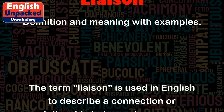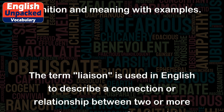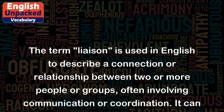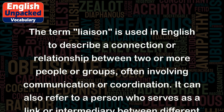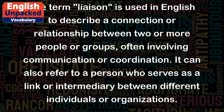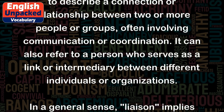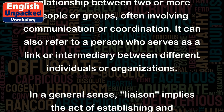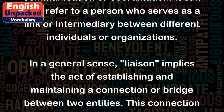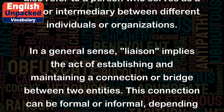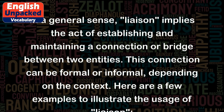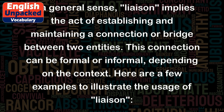The term liaison is used in English to describe a connection or relationship between two or more people or groups, often involving communication or coordination. It can also refer to a person who serves as a link or intermediary between different individuals or organizations. In a general sense, liaison implies the act of establishing and maintaining a connection or bridge between two entities. This connection can be formal or informal, depending on the context.